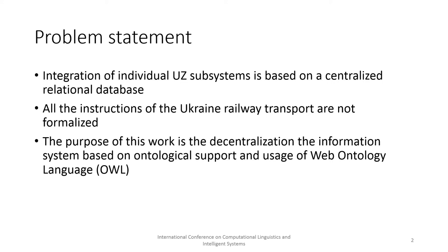For example, in the case of the emergence of new operators on the Ukrainian road network — for the division of UZ into companies on a functional basis, the infrastructure operator with the info and the freight branch with the cargo. At the moment, all the instructions of the Ukrainian Railway Transport are not formalized and the data exchange between systems is performed using an informal message.